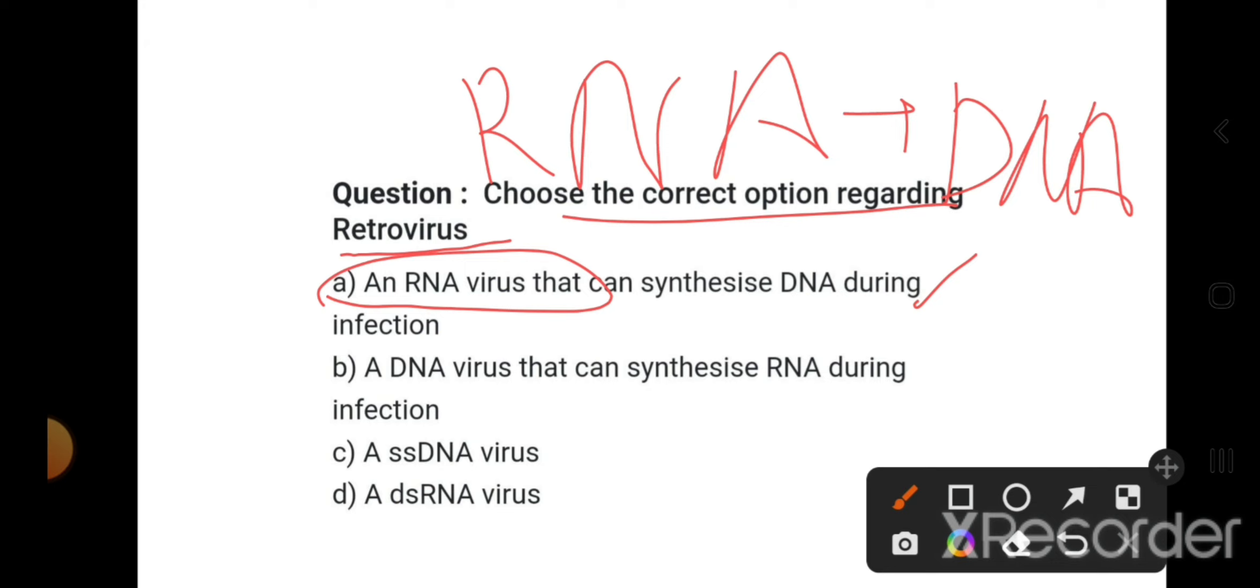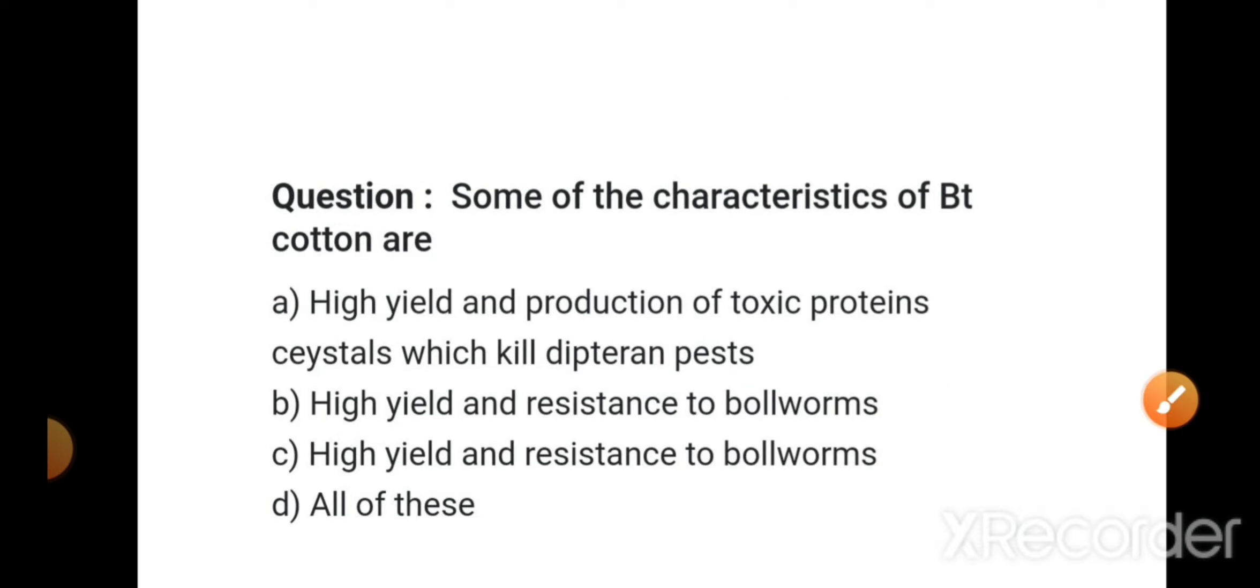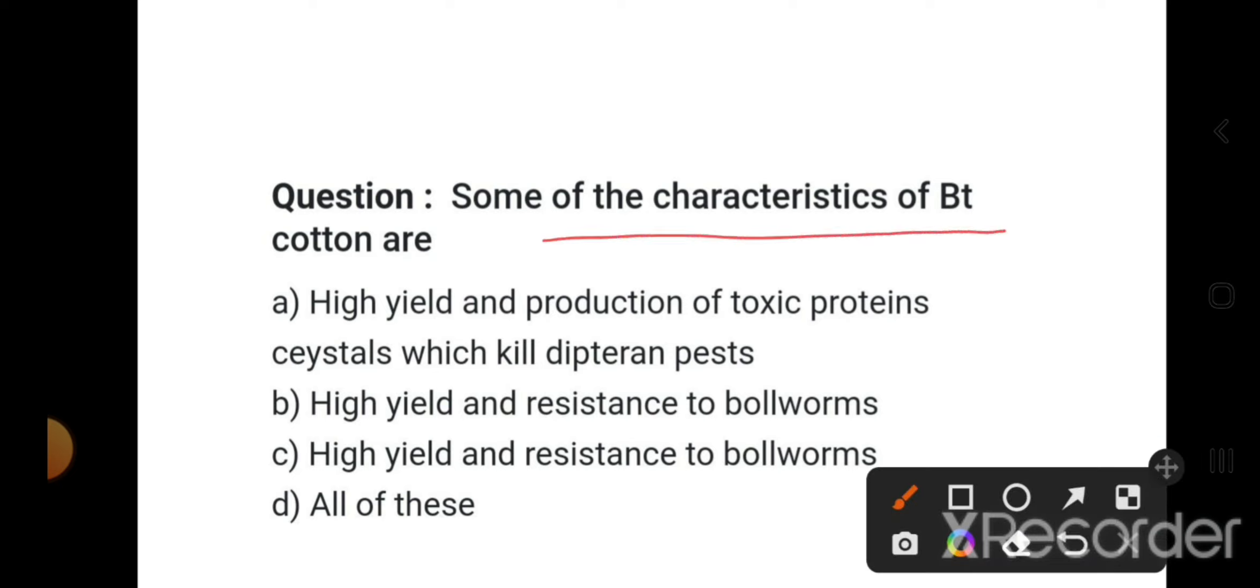Some characteristics of BT cotton: BT cotton means Bacillus thuringiensis cotton. What is correct? High yield and protection from toxic protein crystals which can kill dipteran pests - yes, it kills dipteran pests. This is the right option.